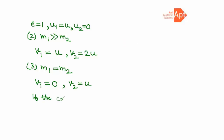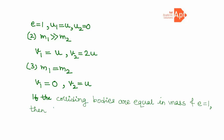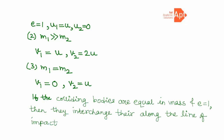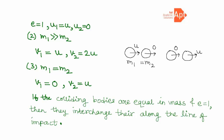Remember: if the colliding bodies are equal in mass and the collision is perfectly elastic (e = 1), they interchange their velocities along the line of impact just before and just after the collision. In Case 3, before collision the velocities were u and 0; after collision they become 0 and u — the velocities along the line of impact are exchanged.